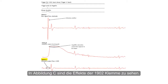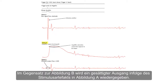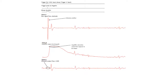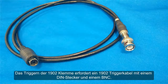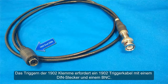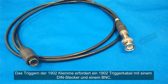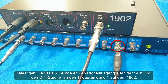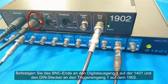In Figure C, you can see the effects of the 1902 clamp, as opposed to Figure B showing a saturated output as a result of the stimulus artifact in Figure A. Triggering the 1902 clamp requires a 1902 trigger cable with a DIN connector and a BNC. Attach the BNC end to Digital Output 1 on the 1401 and the DIN connector to Trigger 2 input on the 1902.